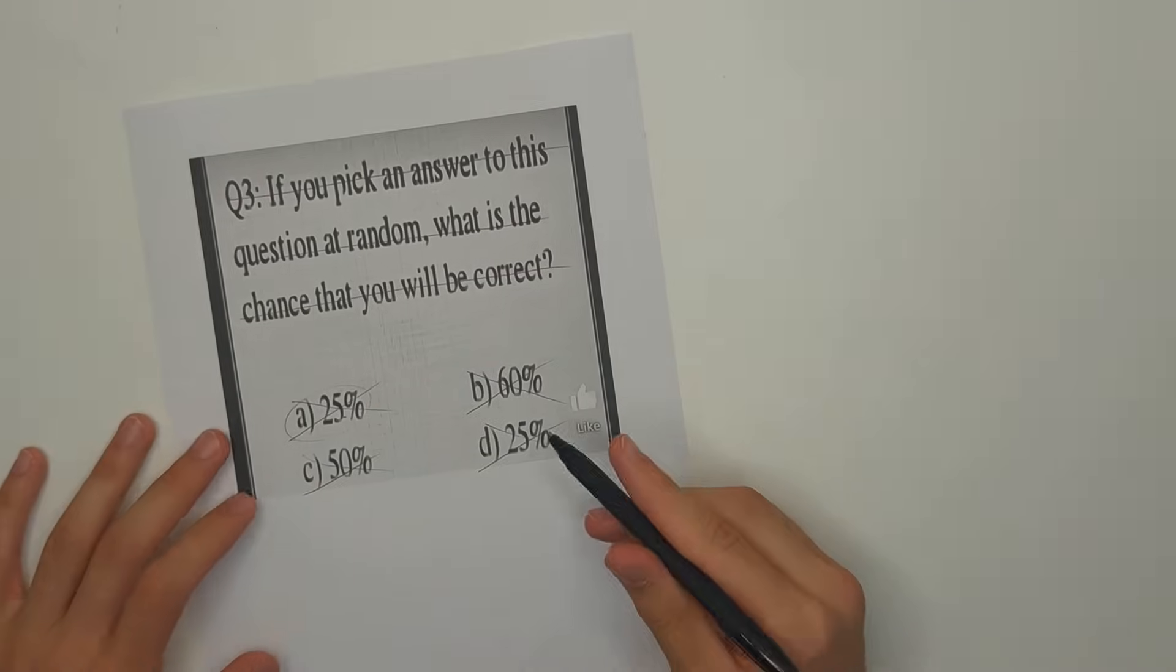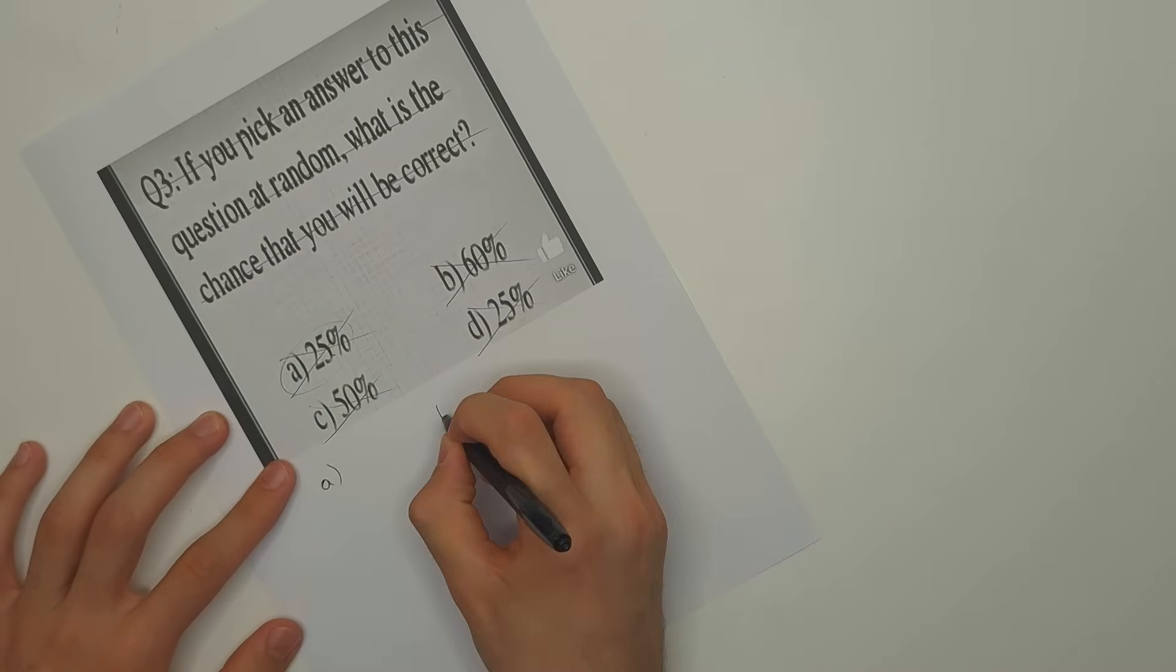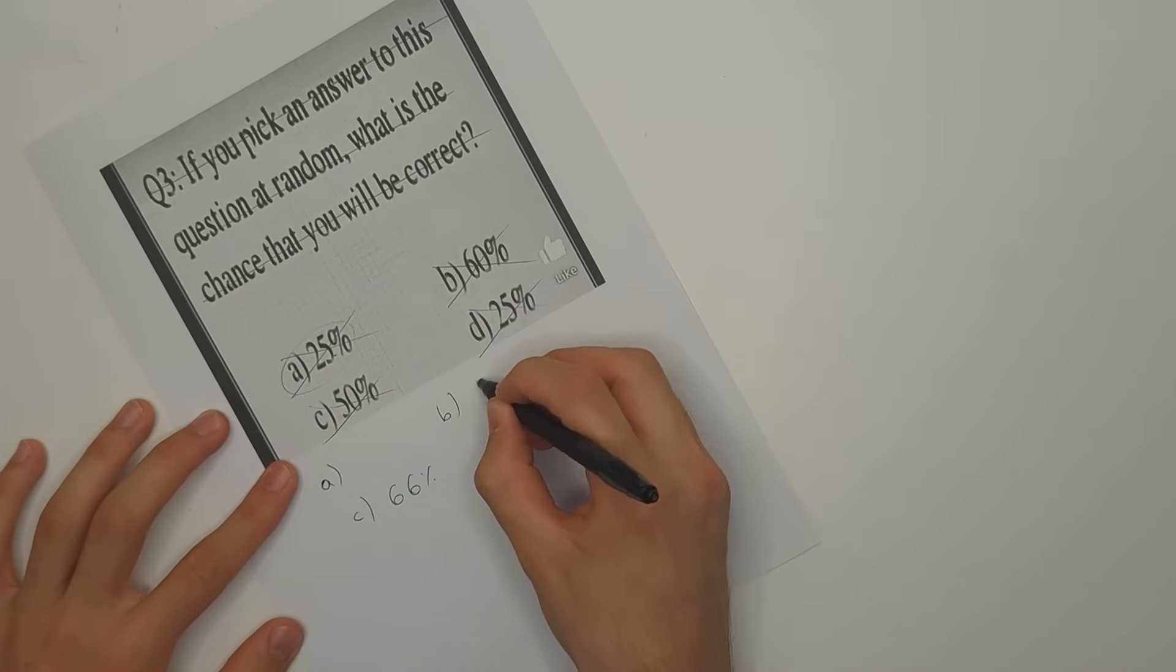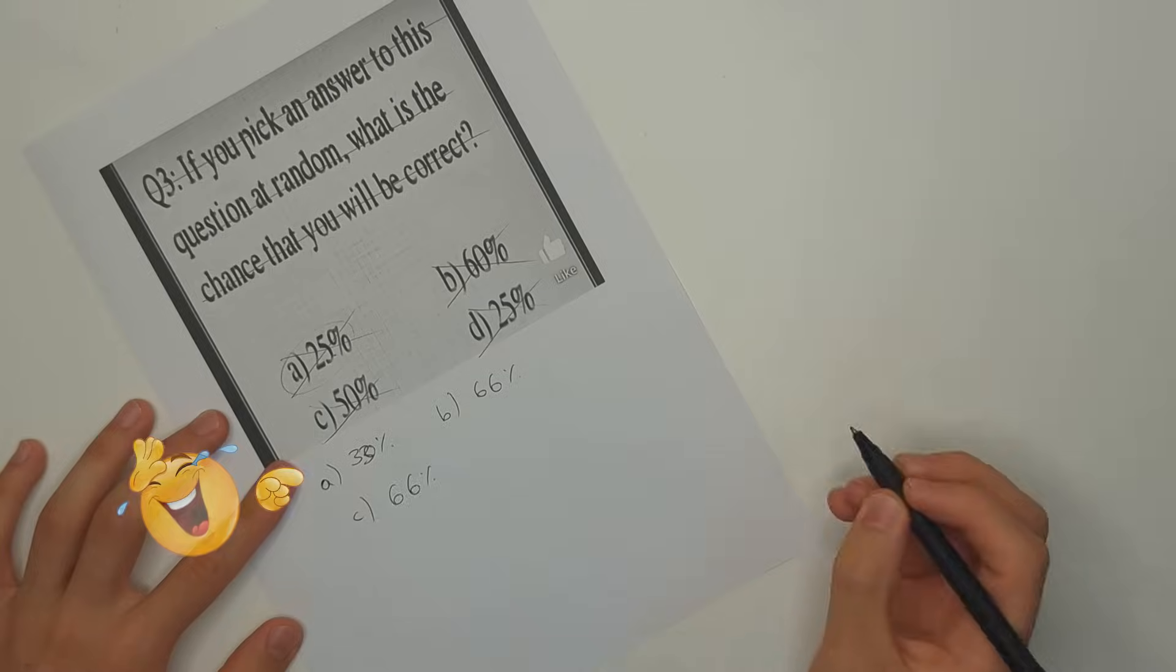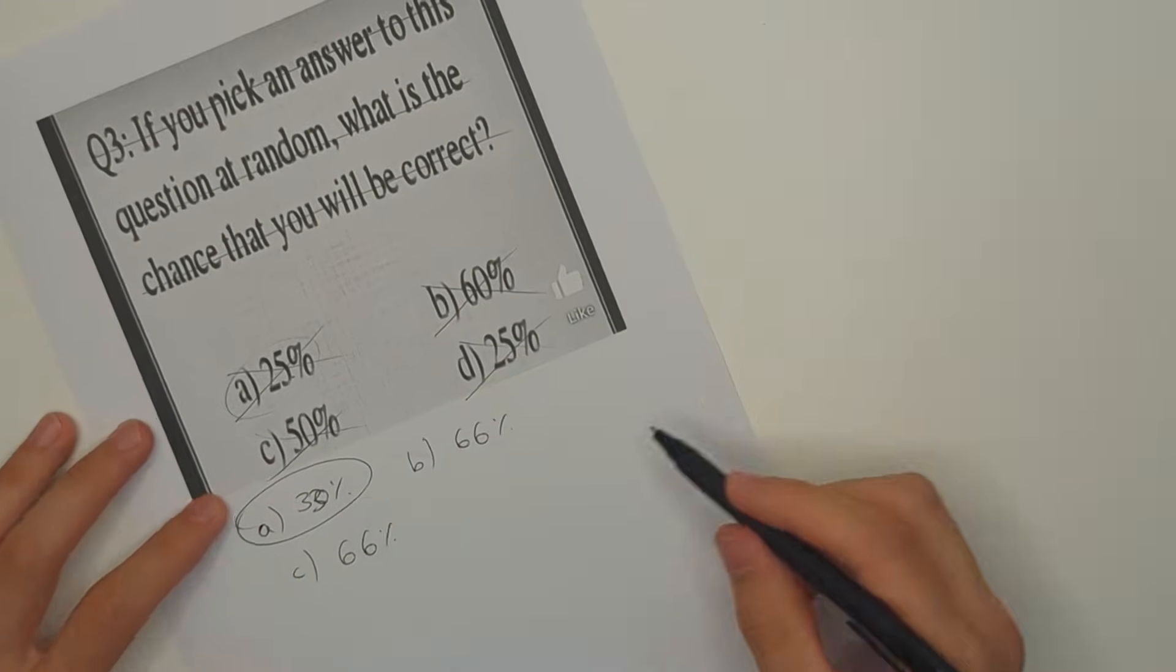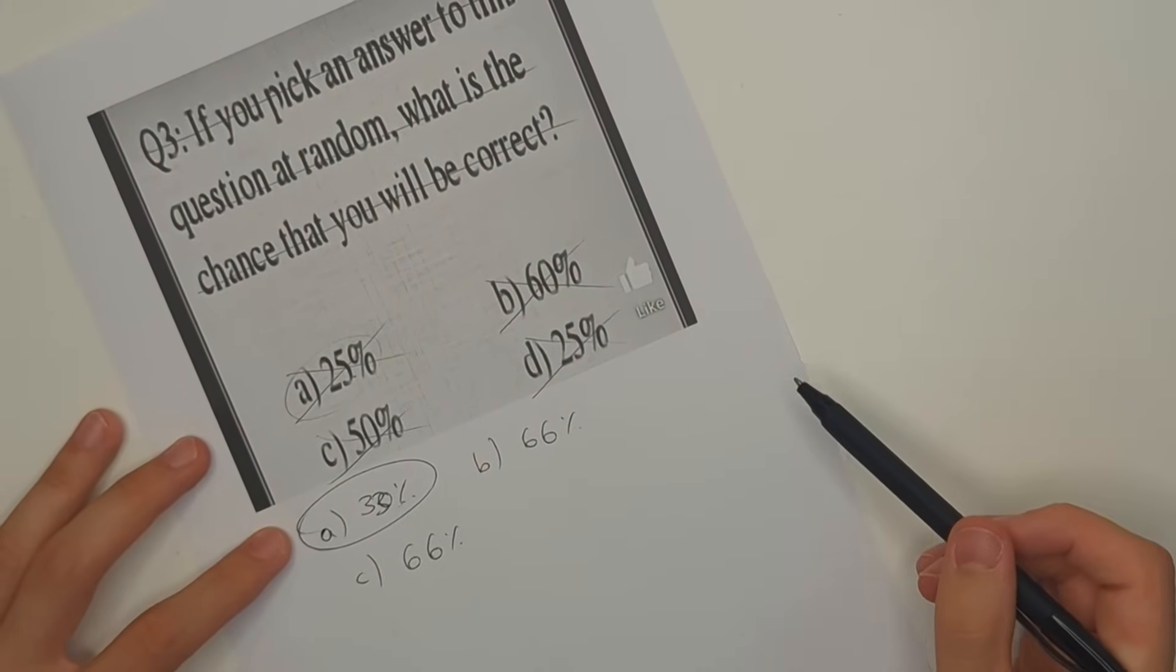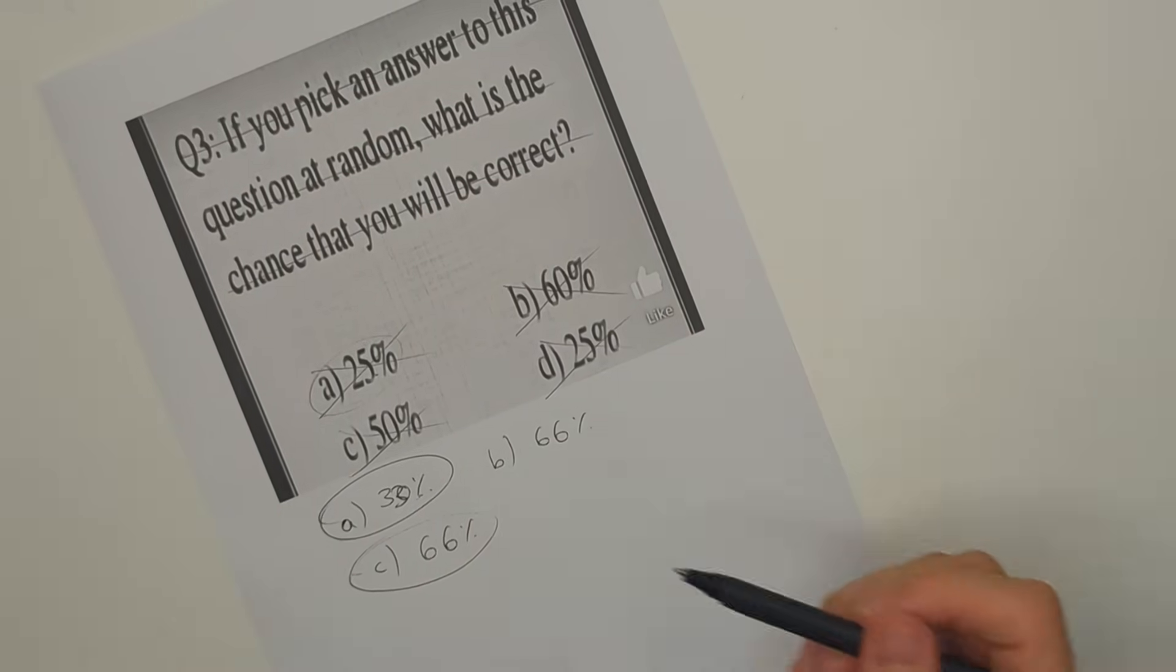Another way you can manipulate this question is if there were only three options A, B and C, and two of those options were 66% and one of those options was 33%. If you pick 33% to be your answer then you would be correct because there's a 33% chance that you would pick 33%, but if you were to pick 66% to be your answer you would also be correct.